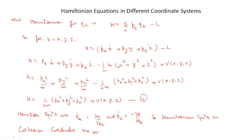Substituting x_dot equal to px/m, y_dot equal to py/m, z_dot equal to pz/m, and the expression for L, the Hamiltonian simplifies to H equal to (1/2m)(px² + py² + pz²) plus V(x, y, z). Let us say it is equation number 4.